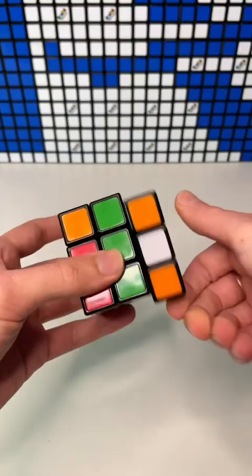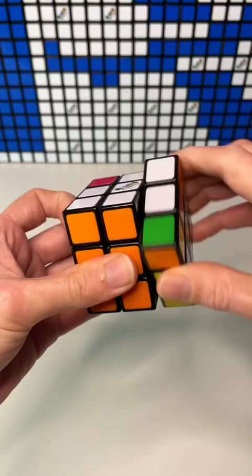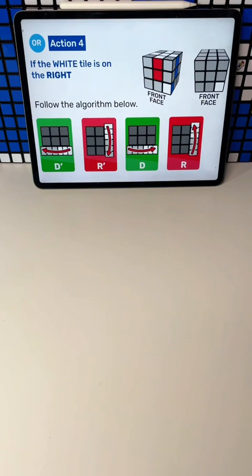But the secret is, if you repeat those algorithms enough times, you'll always get back to where you started. This means that you can make it look like you're messing it up, but really you're putting it in the exact place that you already wanted. Let's take a classic example from our solution guides.